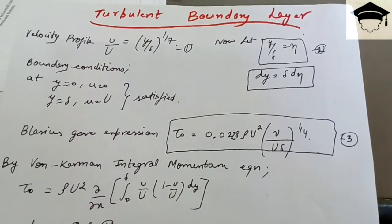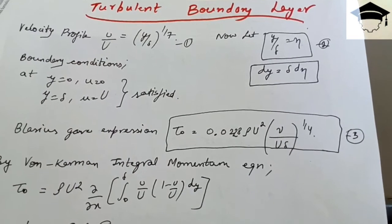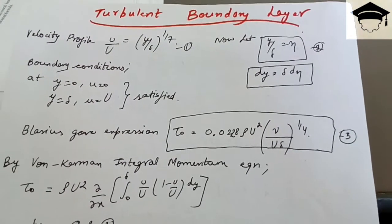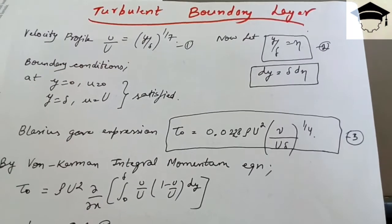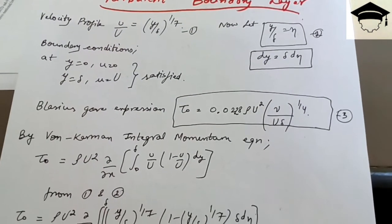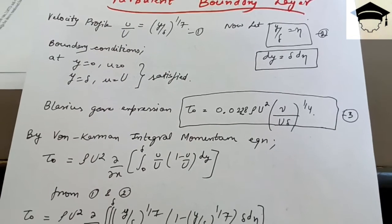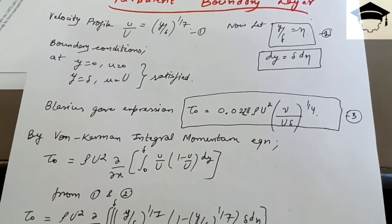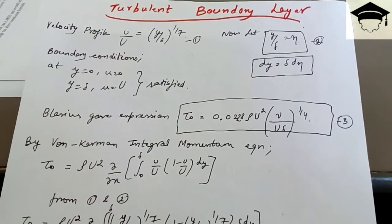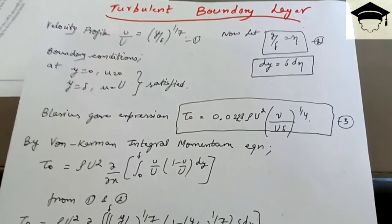From the Von Kármán integral momentum equation, the shear stress τ₀ = ρU² d/dx ∫₀^δ (u/U)(1 − u/U) dy. We now equate the two shear stress expressions. First, we substitute the velocity profile u/U = (y/δ)^(1/7) into the Von Kármán integral momentum equation.